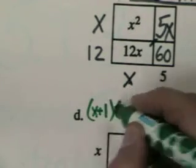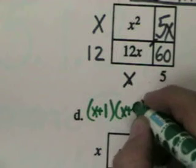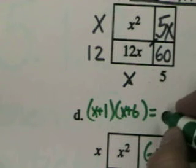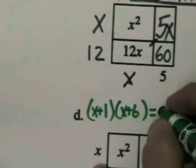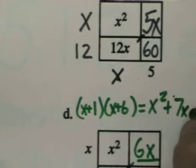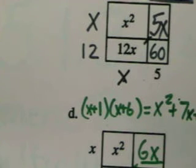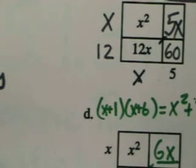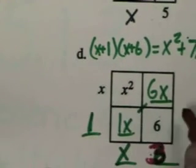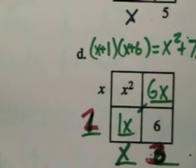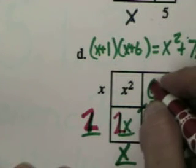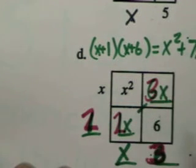X plus 1 times x plus 6 will give me x squared plus... These two will combine. 7x plus 6. Really quickly, I'm going to try to see if I can do this. If I had chosen a number, for example, like 3 here. Then this would have had to have been 2. And this would have been 2x. And this would have been 3x.